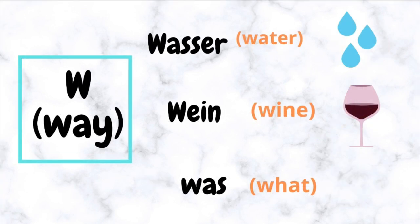W (Weh) — for example: Wasser, Wein, Was.